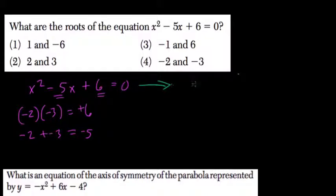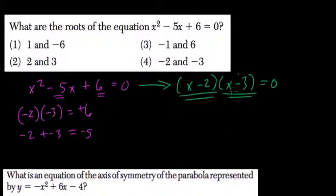So if this is true, then we can factor it into x minus 2 times x minus 3. That will equal 0, so this number or this number or both equals 0.